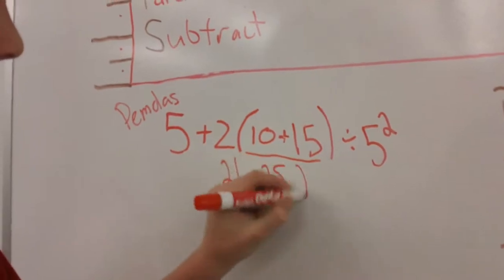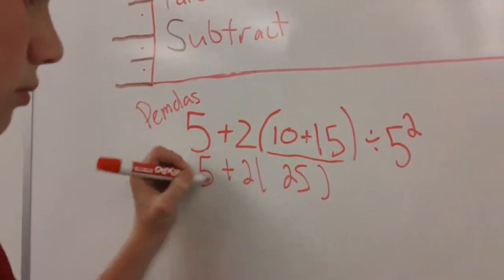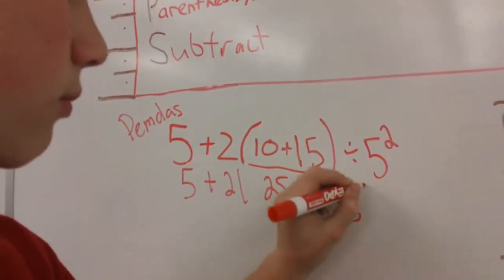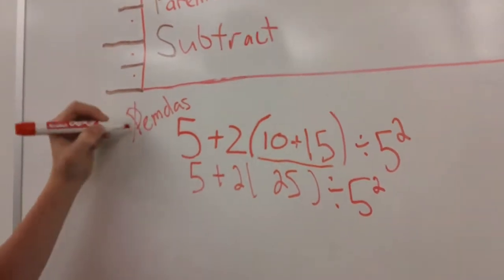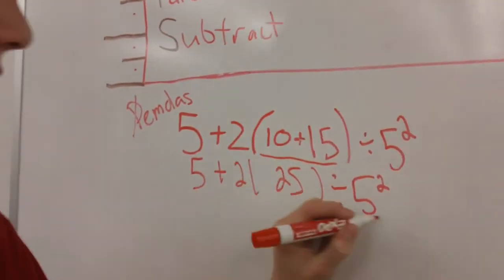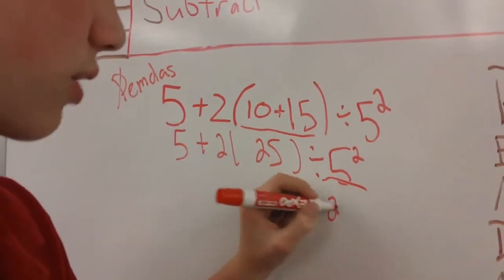And then you would carry everything down and go to the next part. Now you have to do exponents. Five to the second power, which is 25.